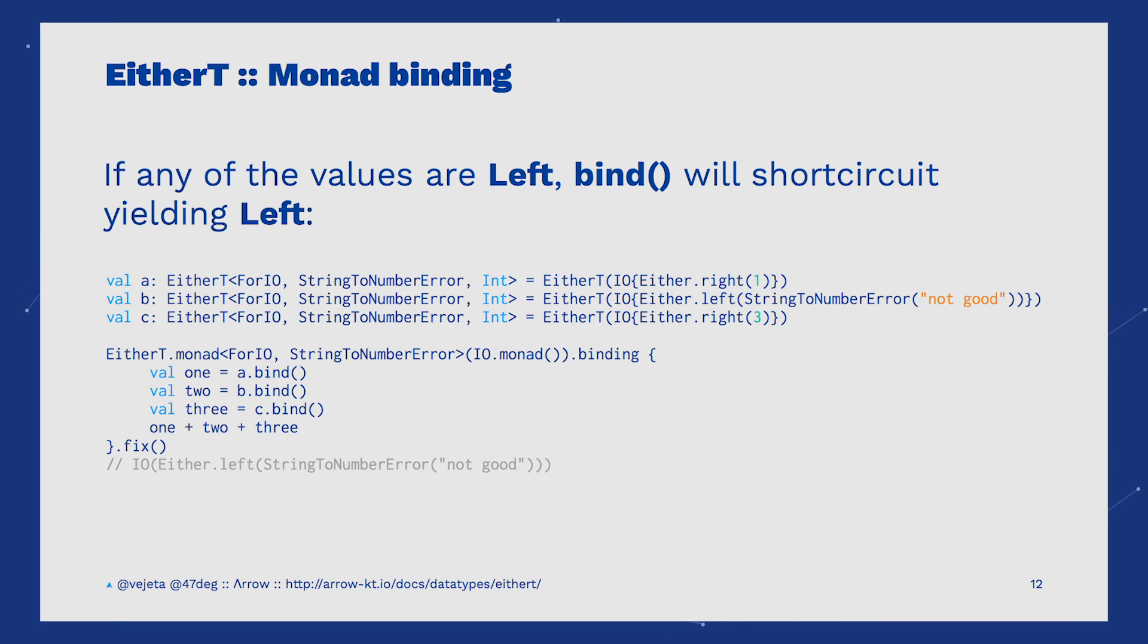If any of the EtherT instances is a left value, the comprehension would short-circuit yielding the first left it finds. In this case, the result will return the left value for B.